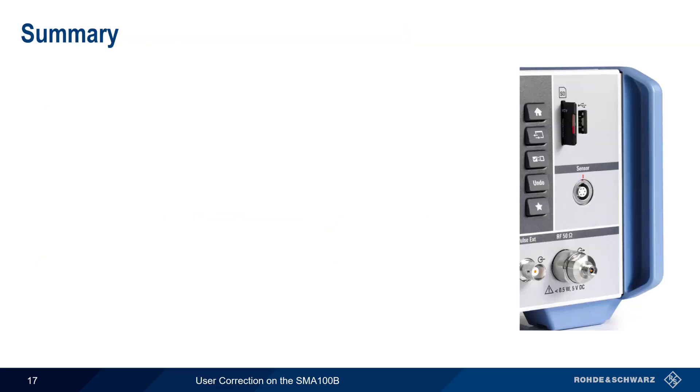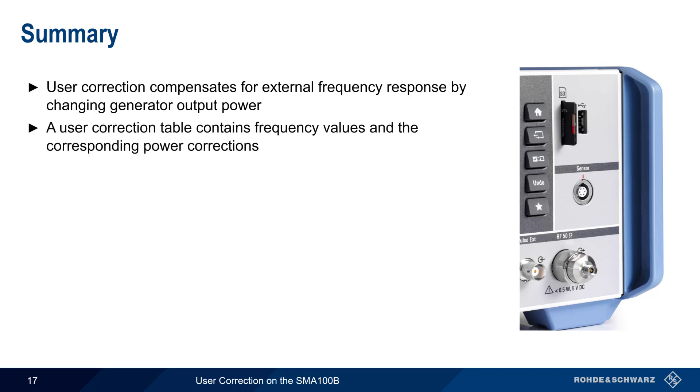Let's summarize what we've learned. User correction is a way that we can compensate for external frequency response, such as losses caused by cables, connectors, etc., by changing the output power based on the current generator frequency. This compensation is done using a user correction table, containing frequency values and the corresponding power corrections or offsets.